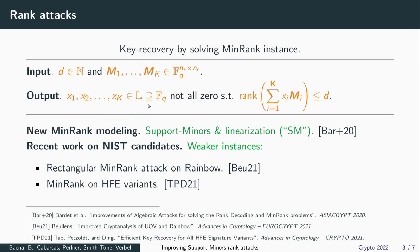Recently, a breakthrough on this problem was the introduction of support miners, which is a new algebraic modelling usually solved using linearization techniques. Independently, there were also some weaker min-rank instances proposed to attack these NIST candidates, and in particular, the work by Tao, Peljold and Digg presented at Crypto last year, which aims at attacking HFE variants by proposing a new min-rank problem.